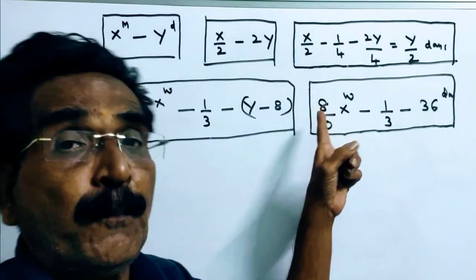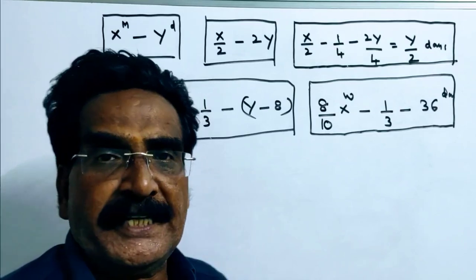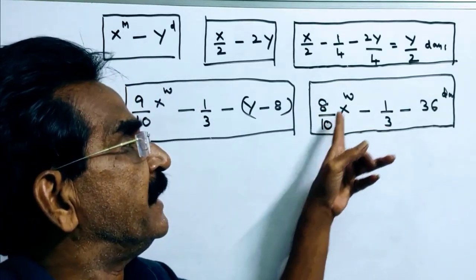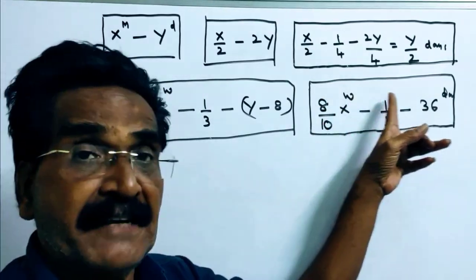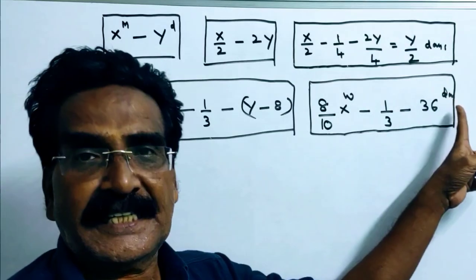And the second statement is 0.8 X women. 0.8 means 8 by 10. 8 by 10 X women can complete the same 1 by 3 work in 36 days.